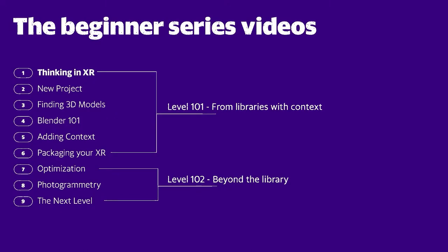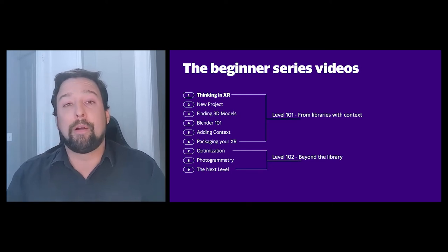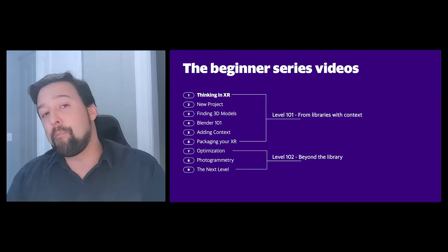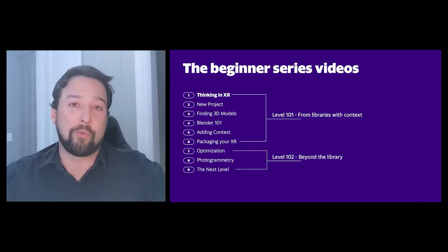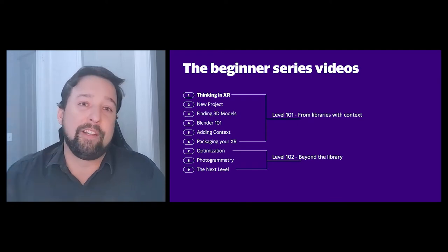This beginner training video series is going to be in nine parts. The first six are really focused on how you can create content from libraries and tell a story with 3D art other people have already made, assembling that into a new story and then providing context on top of it. After we finish those first six, we'll talk about what you need to do to go beyond the library — that may include improving the performance of 3D models, 3D scanning your own models, an introduction to photogrammetry, and some more advanced XR technologies to wrap it all up.